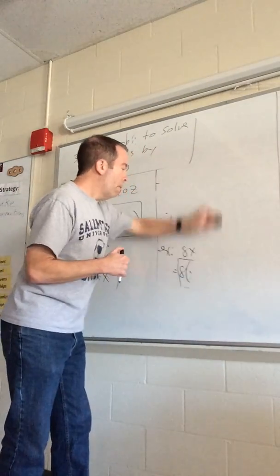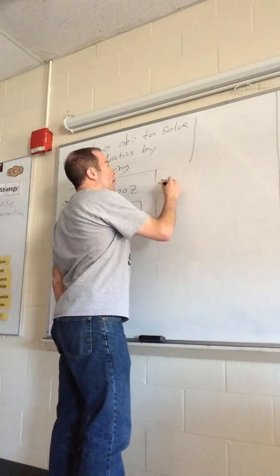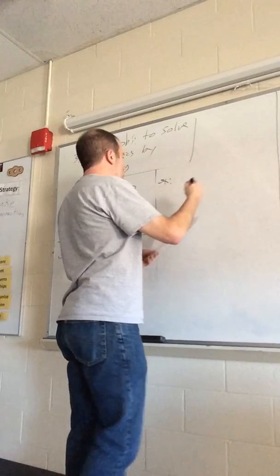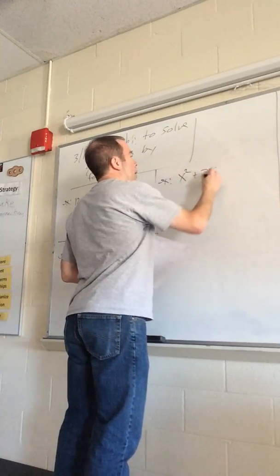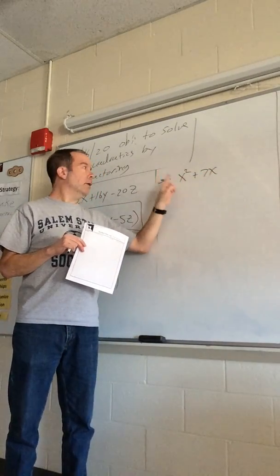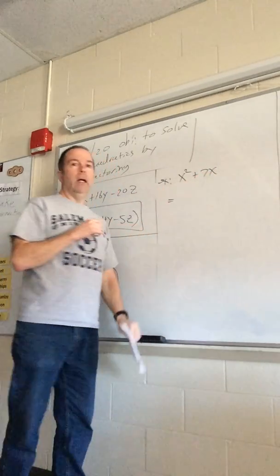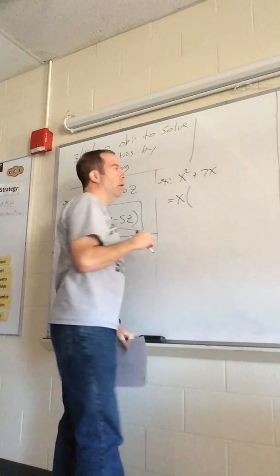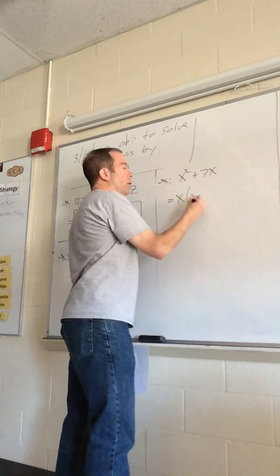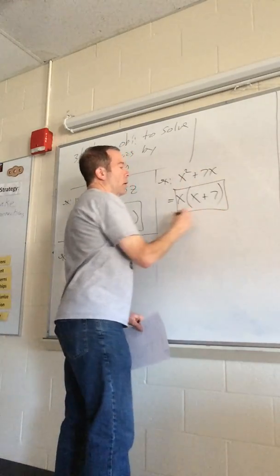We should combine numbers and variables together. For x² + 7x, they both have x's — this one has a pile of two x's, this one has a pile of one x. We factor out one x. X times what makes x squared? That's x. And x times what makes 7x? That's 7. And there are our factors.